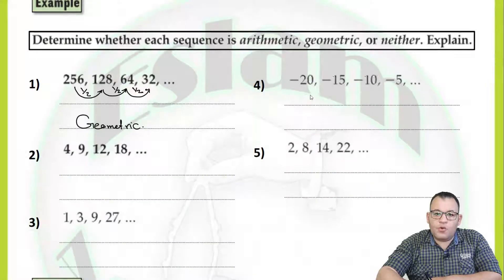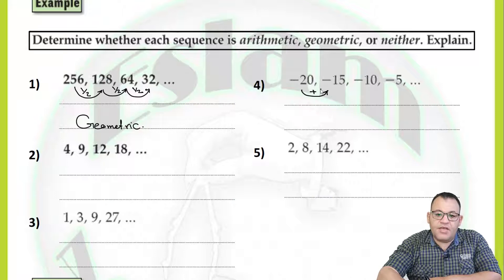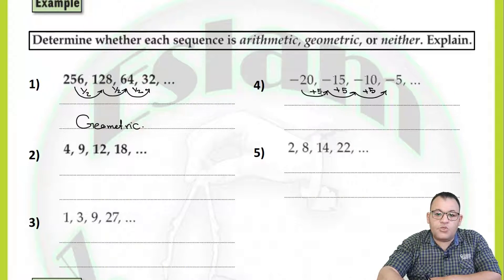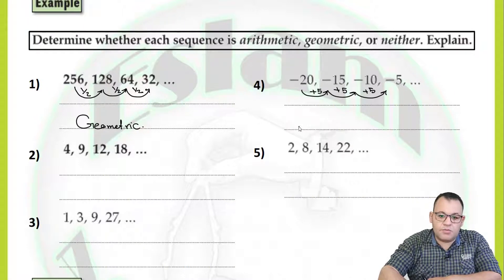For number four, we need to check if it's arithmetic or not. Negative 15 minus negative 20 equals positive 5, meaning you add 5. Negative 10 minus negative 15 equals positive 5. Negative 5 minus negative 10 equals positive 5. Because you add the same number each time, it is an arithmetic sequence.